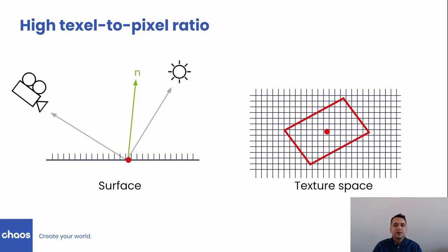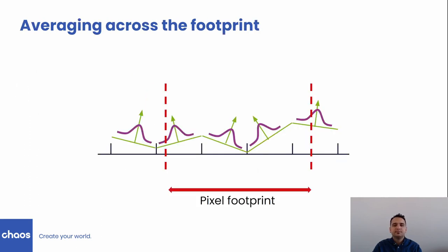This is a very common scenario in rendering applications. Texels in the pixel increase when the object is moving away from the camera, when lower resolutions are rendered, or when the texture tiling is increased. In order to filter the result, we average all texel contributions in the pixel footprint. For a small number of texels in the pixel, we can loop through all texels and accumulate all contributions, but for high texel-to-pixel ratios, this is inefficient.